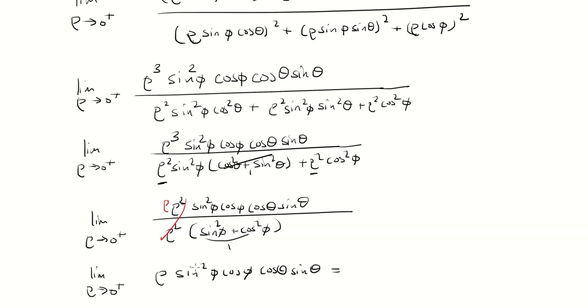And then if I plug in rho equals zero, I end up with my limit equals zero.